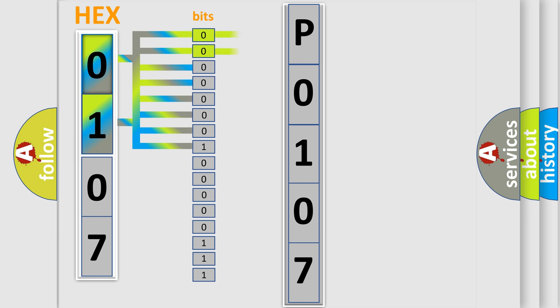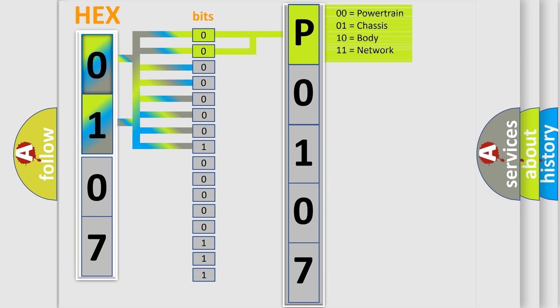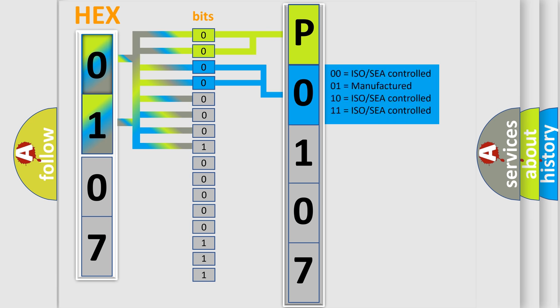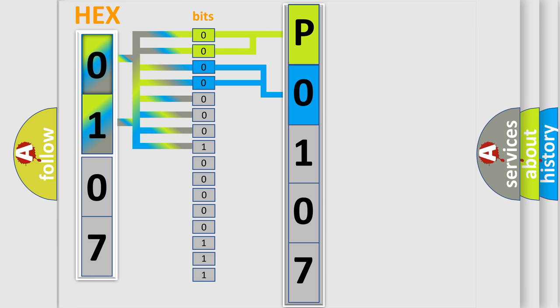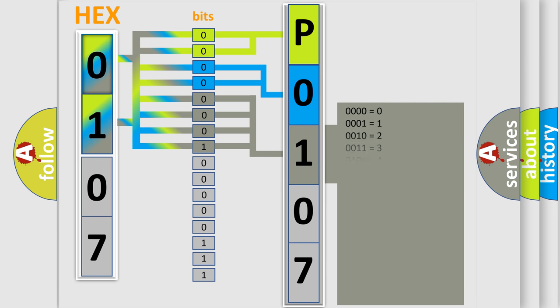By combining the first two bits, the basic character of the error code is expressed. The next two bits again determine the second character. The last four bits of the first byte define the third character of the code. The second byte is composed of a combination of eight bits.